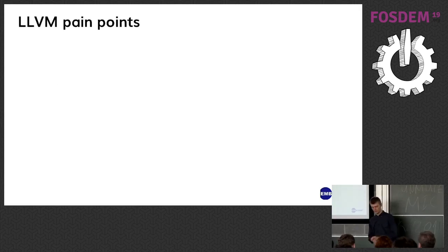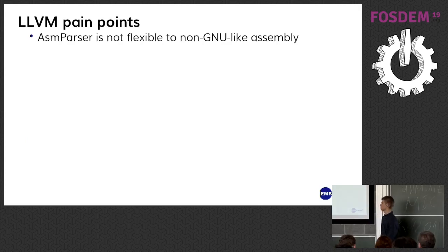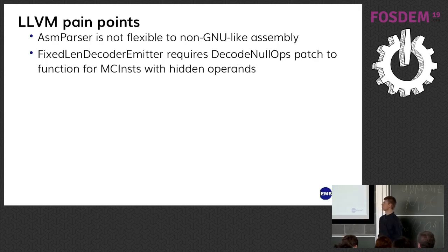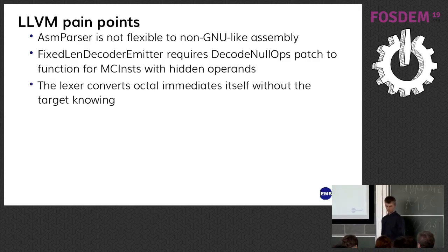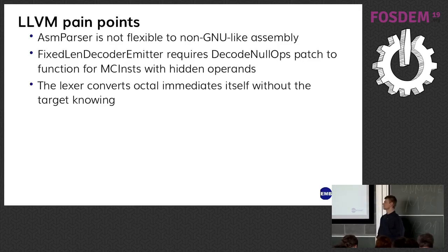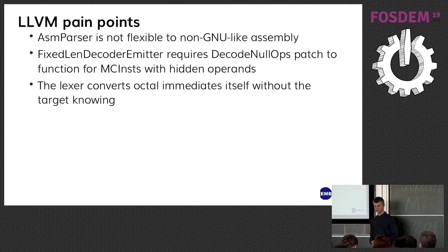Some things I found in LLVM: AsmParser is not flexible to non-GNU-like assembly. Fixed-length decoder emitter requires the decode null ops patch to function for MC instructions with hidden operands. The Lexer converts octal immediates itself without the target knowing — the problem with the AGC backend is all operands must be in octal form. So when the Lexer converts something preceded with a zero to an octal integer, I don't know whether I still need to convert the immediate back to octal or not, so I have to get the raw string that was converted first and do it myself.